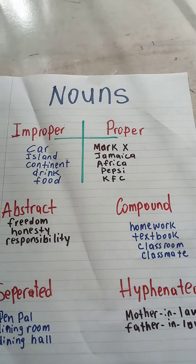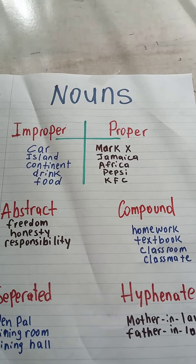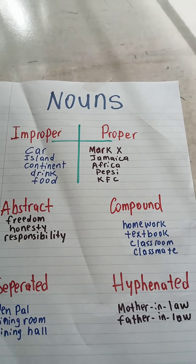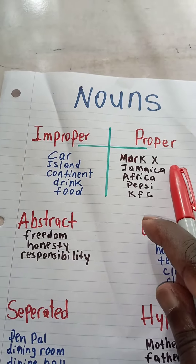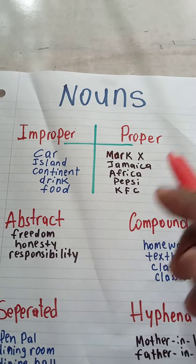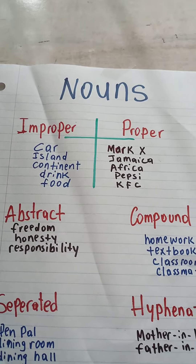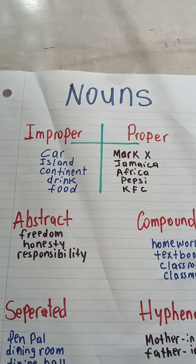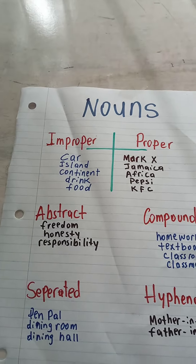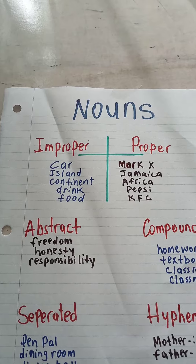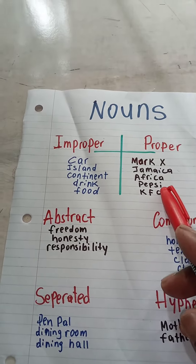A noun is the name of a person, a place, or a thing. And so we want to deal with improper nouns and proper nouns. Remember, as you learn in school, it is the name of a person, a place, or a thing — but we're looking at it in two different categories: improper nouns and proper nouns.